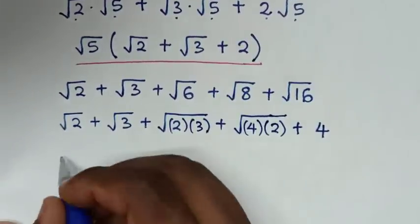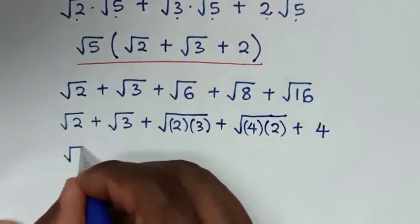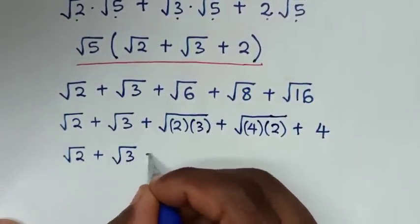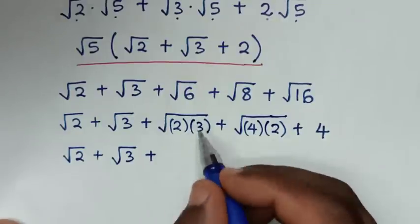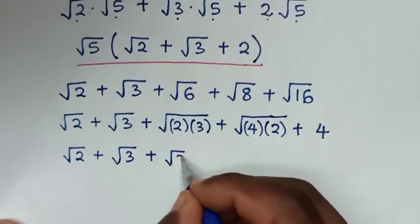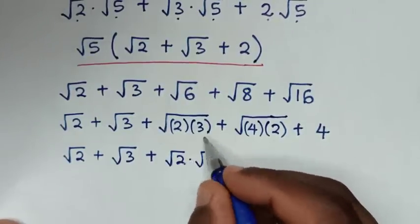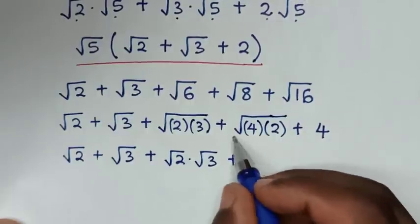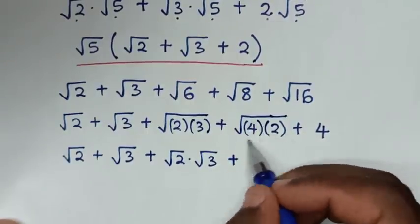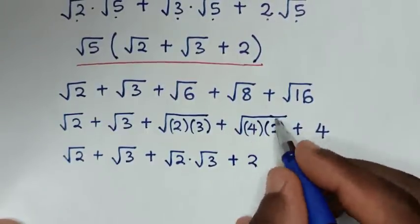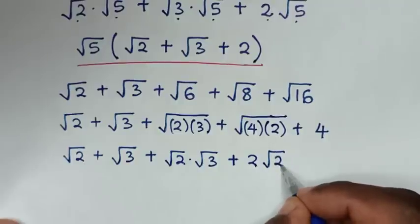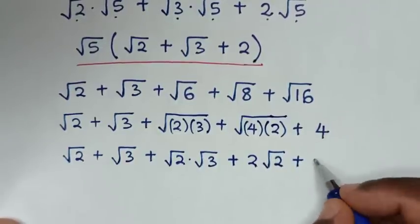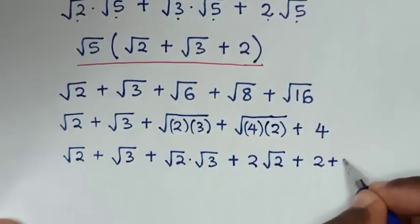In the next step, we separate these: square root of 2 plus square root of 2 times square root of 3, plus square root of 4 — which is 2 — times square root of 2, plus 4, which is the same as 2 plus 2.